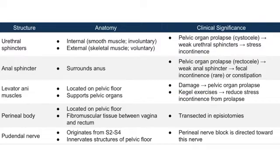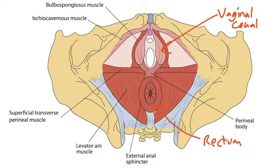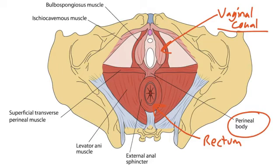Next, let's discuss the perineal body. This is located on the pelvic floor and is fibromuscular tissue between the vagina and the rectum. We can see the vaginal canal and the rectum, with the perineal body connecting the two. During an episiotomy, the doctor can transect this area. An episiotomy is a procedure to increase the size of the vaginal canal to allow for passage of the infant, so this fibromuscular tissue can be cut.